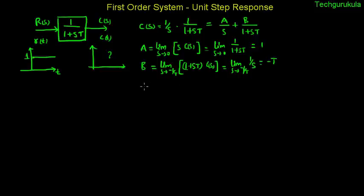Now having known the constants a and b, if you rewrite c of s it will be 1 over s plus minus t over 1 plus st. We can rewrite this further by taking t common from numerator and denominator. We get 1 over s plus minus 1 over s plus 1 over t.